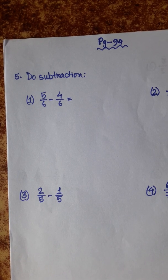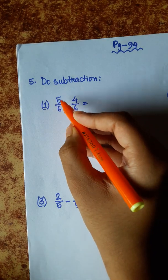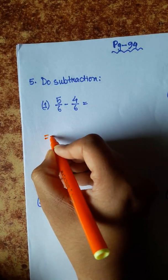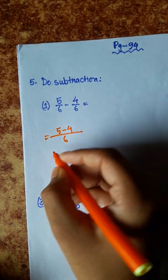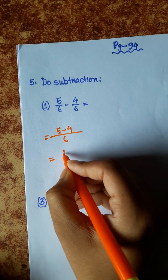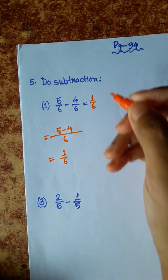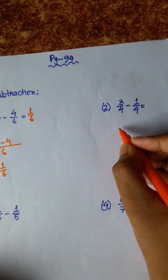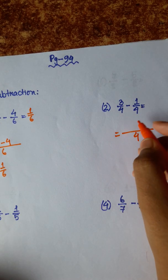Now we will do fraction subtraction. The rules are the same. Number 1: 5 by 6 minus 4 by 6. Denominator 6, numerator 5 minus 4 is 1. Answer is 1 by 6. Next, number 2: 3 by 4 minus 1 by 4 — denominator same, 3 minus 1...